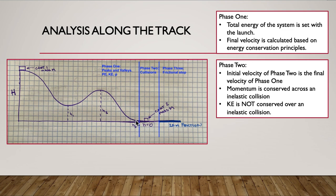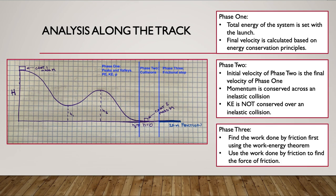In phase two, the initial velocity is the final velocity from phase one. Remember: momentum is conserved across an inelastic collision, but kinetic energy is not. In phase three, you'll first find the work done by friction using the work-energy theorem, and then find the force due to friction. We'll go over all these phases in more detail on the next slides, so don't panic if it's not quite sinking in yet.